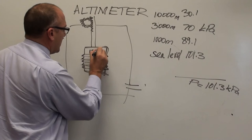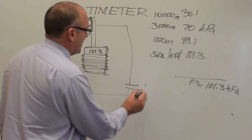So, at sea level, the pressure inside that is always 101.3 because it's sealed.